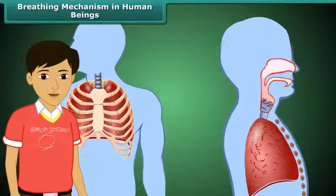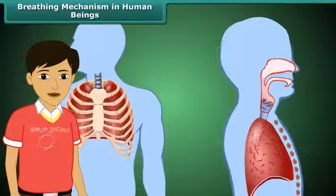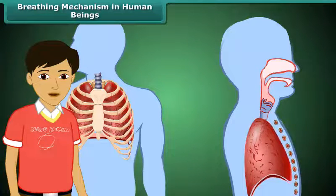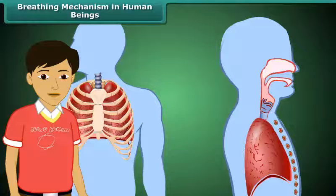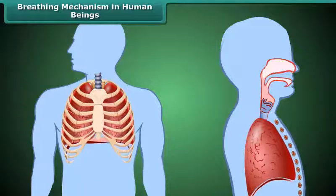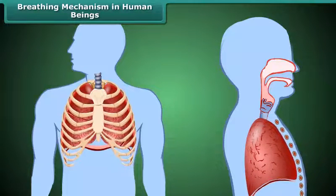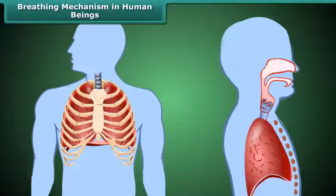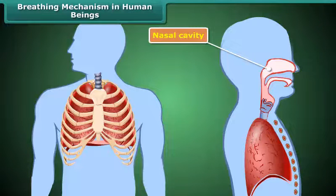Let us now understand how breathing occurs in human beings. First, we inhale air through our nostrils. This inhaled air passes into the nasal cavity, where the air is filtered and heated.